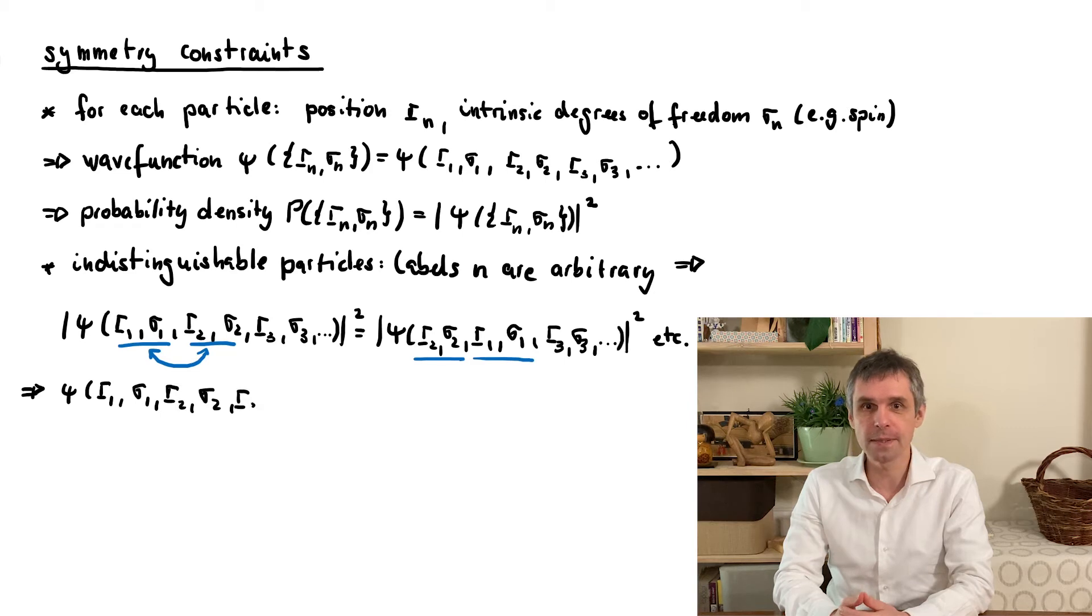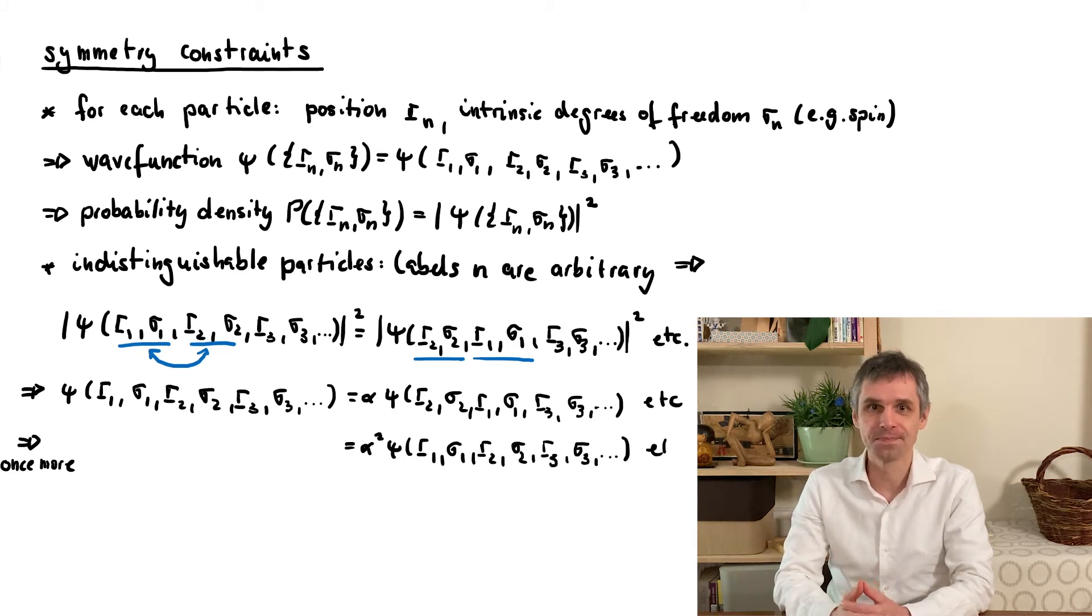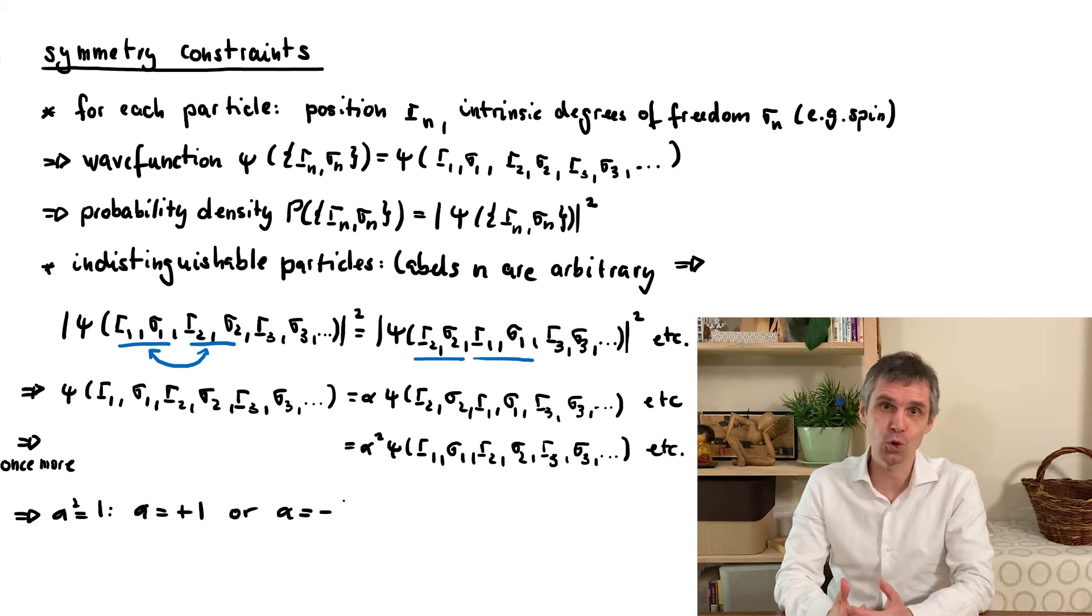For the wavefunction, this then means that interchanging the labels can at most have the effect of multiplying it by a constant. I call it alpha, as this is the only liberty we have without changing any of the observable properties. And now when we apply the same logic again to the same pair of indices, we see that alpha needs to square to 1. Note that this is not the absolute value square, just the normal square. So this leaves us exactly with two options, namely that alpha equals plus 1 or minus 1.